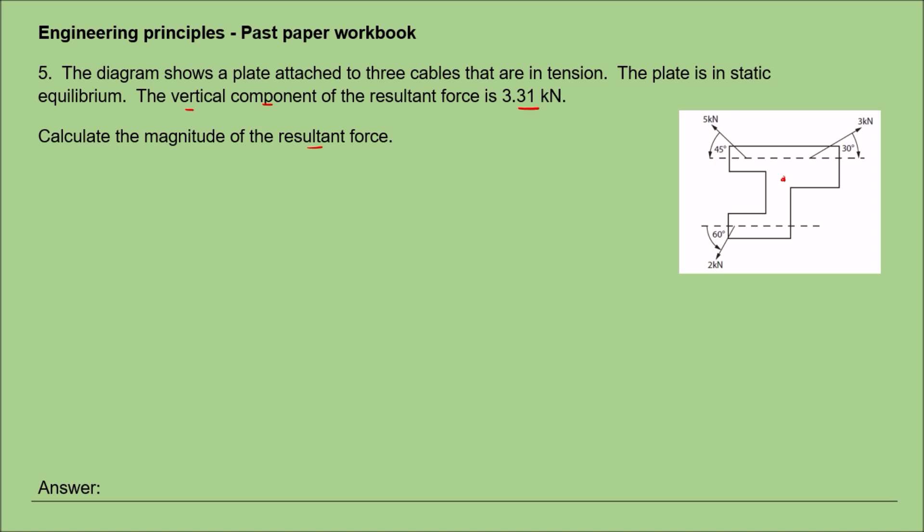This is a bit of a recap—things we've done before. We know what's going on vertically, so we don't need to concern ourselves with forces going up. We're only interested in what's going on horizontally in each direction. When we find the sum of the horizontal forces, then we'll use the vertical component to find the resultant.